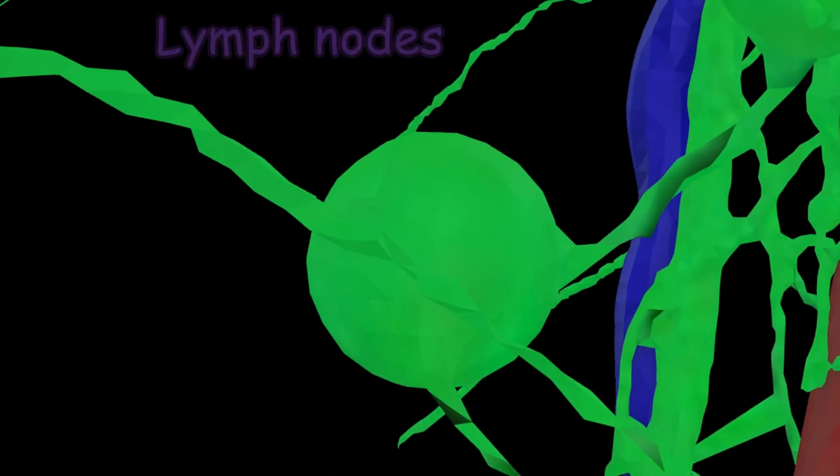Lymph nodes are small round organs that filter out bacteria, waste, and other toxins. They also contain infection-fighting white blood cells.